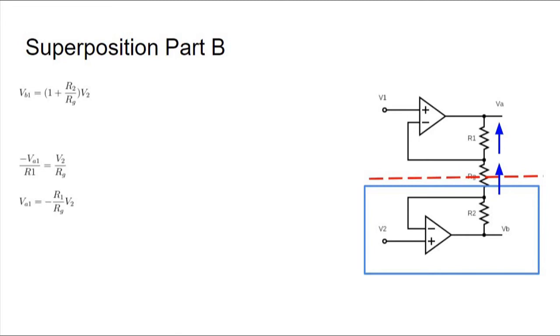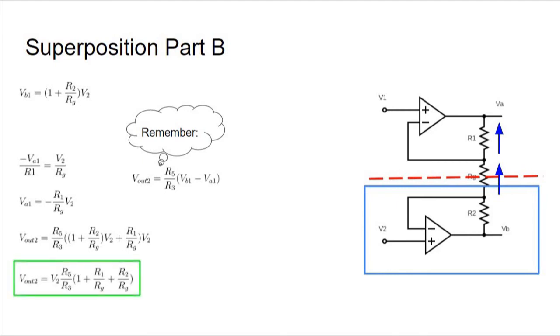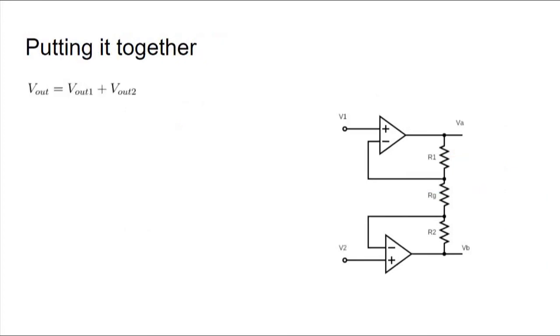Solving for Va, we get Va equals negative R1 over RG times V2. We'll plug in the answers we just found to get Vout equals R5 over R3 times the quantity 1 plus R2 over RG times V2 plus R1 over RG times V2. Simplifying by taking out the V2 and removing extra parentheses, our second output voltage equals V2 times R5 over R3 times the quantity 1 plus R1 over RG plus R2 over RG. We found both sources, so now we can put them together using superposition.